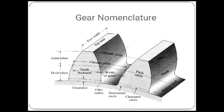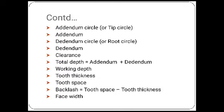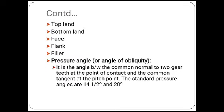Classification based on types of gearing: external gearing, internal gearing, and rack and pinion. This is the gear nomenclature — here you can see the outer circle, circular pitch, tooth thickness, width of space, pitch circle, clearance circle, addendum, dedendum, face width, flank, bottom land, face, and more. Terminology such as pinion, pitch circle, pitch circle diameter, etc. are all explained here.